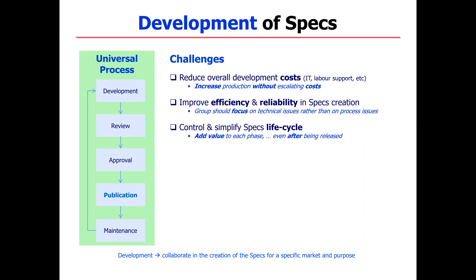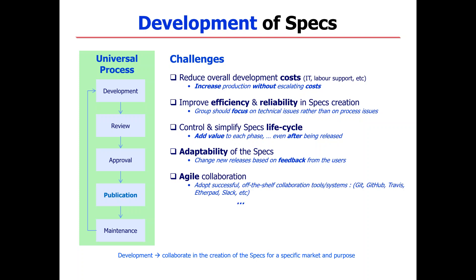Another thing is the adaptability of the specification — changing new releases based on feedback from users. Historically for us, the feedback for creating the next version of a particular release is based on internal input from our members. If your members are not large enough and don't have the footprint to create a market, you need to get that feedback from outside. And the other thing is agile collaboration — you need to adopt off-the-shelf tools, follow what the developers are doing, and communicate with them in the language they speak.